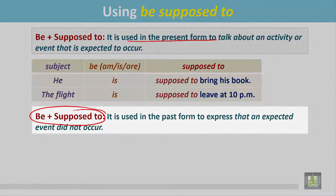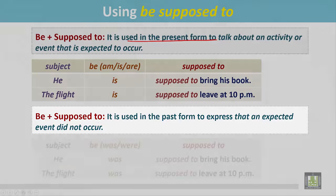Be plus supposed to is used also in the past form to express that an expected event didn't occur. See the examples.